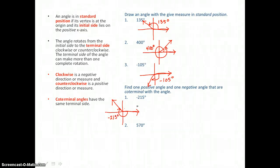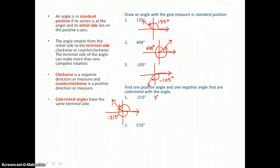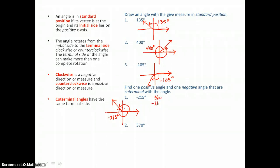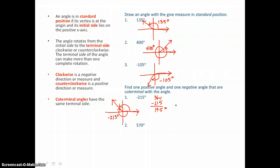Now to graph one positive angle that will stop at that same terminal side, how far do I have to go? I have to go 360 degrees minus that 215, which is going to be 145 degrees in the positive direction.